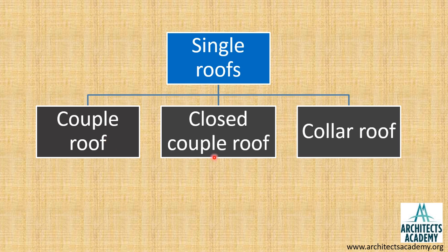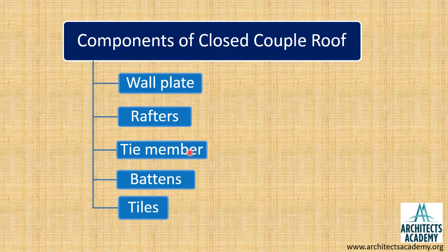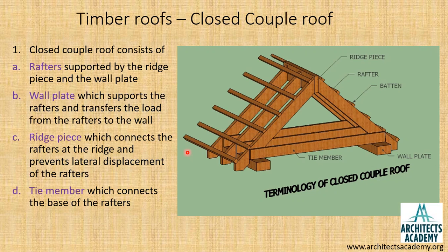In part 1 of the presentation we had seen details about the couple roof. In this particular presentation we are going to learn about the closed couple roof. The closed couple roof consists of the following components: wall plate, rafters, tie members, battens, and tiles. The additional member which has been introduced here is the tie member.